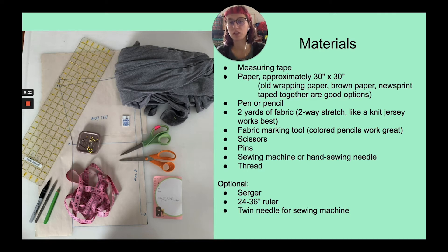The first thing you'll need is a measuring tape, something soft that you can use to measure your body. And then you'll need a piece of paper, approximately 30 inches by 30 inches. Old wrapping paper, a brown paper bag, or newsprint taped together all work really well. You're going to want a pen or a pencil, approximately two yards of fabric. In this case, I'm using a two-way stretch like a knit jersey. I have an old sheet from the thrift store that I'll be using.